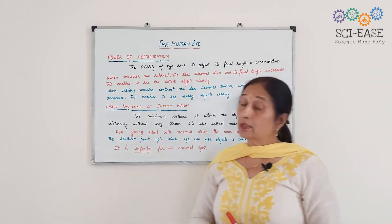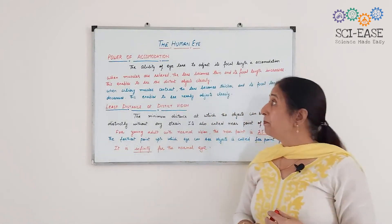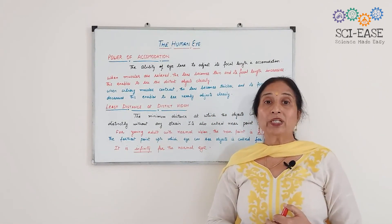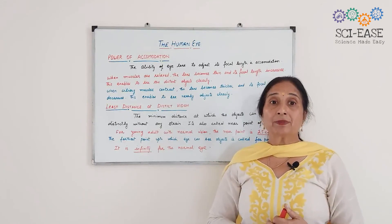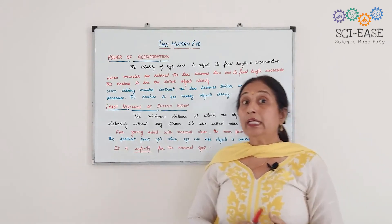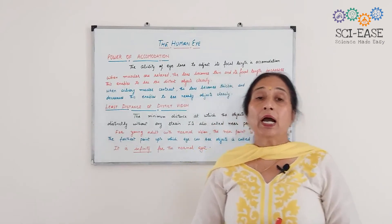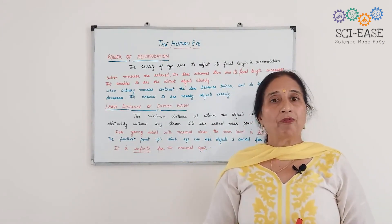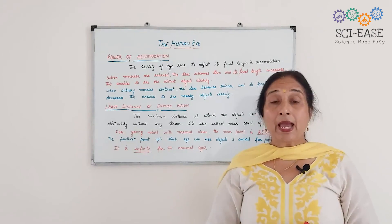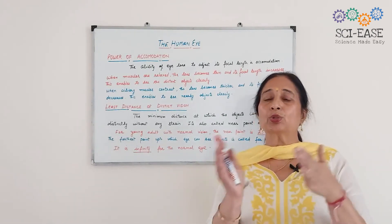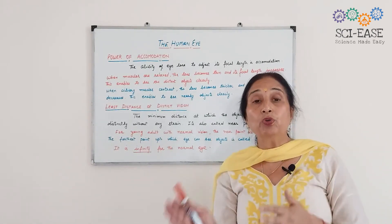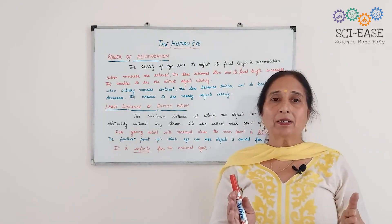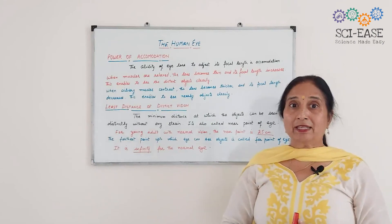So this is all about power of accommodation, least distance of distinct vision, and a few related terms. In the next video, I will take up defects of the human eye and how to correct and remove those defects — that is a very, very important topic.